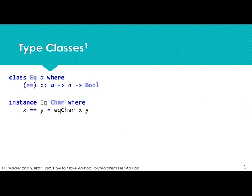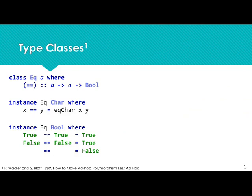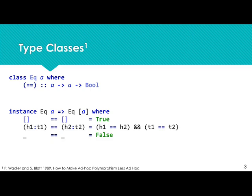Now you can go slightly more complex — for instance, something like polymorphic lists. The interesting part here is that any list is an instance of the equality class, given that its contents are an instance of the equality class as well, since we need to be able to compare elements of type A.